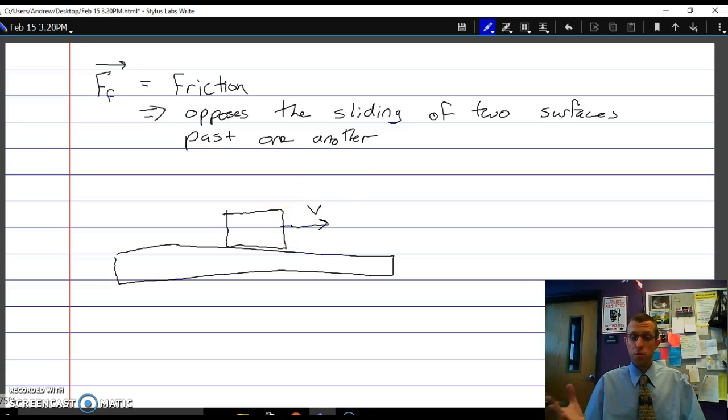Now that can be resolved, and friction is trying to resolve this. It can be resolved in two ways. Either the bottom one can start to move over this direction, and so it gets a frictional force over this way, or the top one can stop sliding, and so it's going to get a frictional force over this direction.